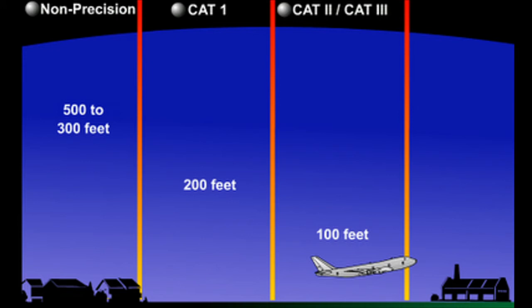In ILS there are three categories: Category 1, Category 2, and Category 3. In Category 1, the aircraft follows the glide slope down to 200 feet above the runway. If the runway is not visible at that point, the pilots have to abort the landing — also known as a go-around in aviation terms.